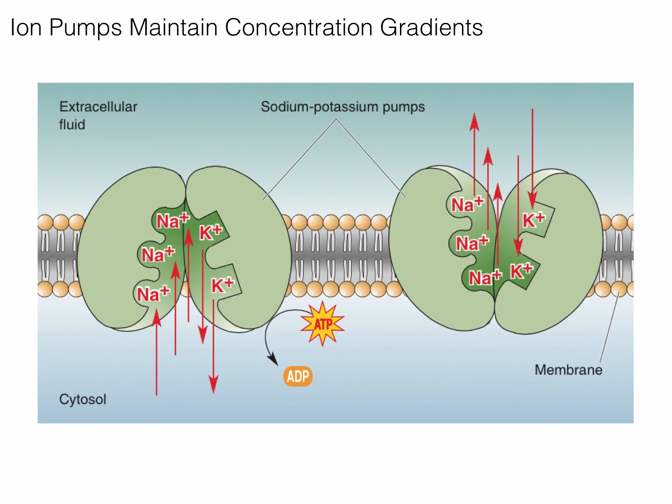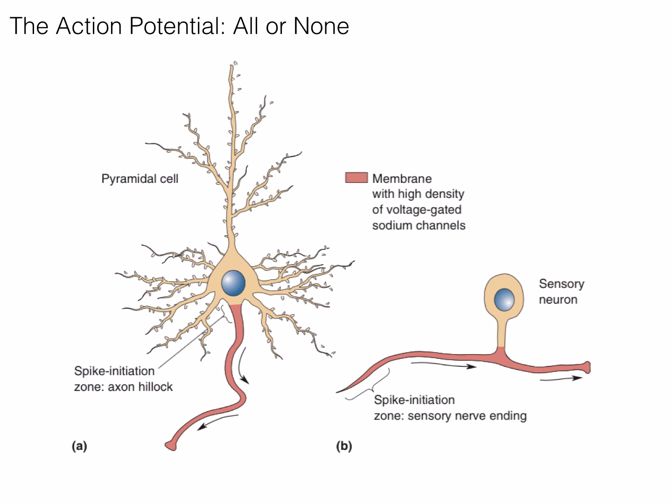It is important to note that very few ions are exchanged in the event of an action potential. An action potential is an all-or-none event. Typically, the axon hillock — the part of the neuron where the axon originates from the soma — is often called the spike initiation zone. If this area is depolarized beyond threshold, between minus 40 and minus 55 millivolts, this will trigger an action potential, which will propagate down the length of the axon to the axon terminals. However, if threshold is not met, an action potential will not occur. This is the all-or-none nature of the action potential.